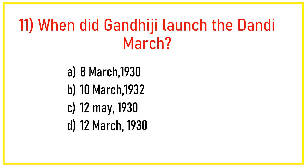Q11. When did Gandhiji launch the Dandi March? Answer: Option D — 12 March 1930.